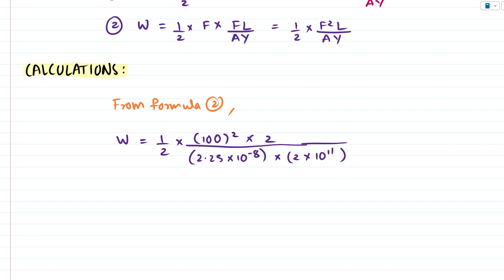Now let's try to simplify this further. So we get 100² is 10,000 which can be written as 10⁴ × 2 and denominator maybe we have 2 × 2.25 that is the cross sectional area × 2. And if we were to multiply 10⁻⁸ × 10¹¹ we get 10³.